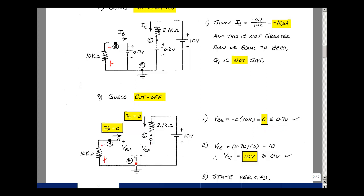Let's solve for the collector-emitter voltage. With the current in this direction, we get a drop like this. The rise in voltage is VCE. The rise in voltage is 2.7K times 0 equals the drop of 10 volts. Then VCE is equal to 10 volts. Is that greater than or equal to 0? Yes. So our state's been verified.